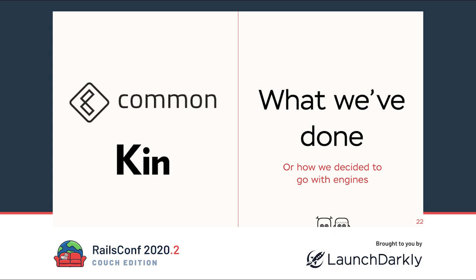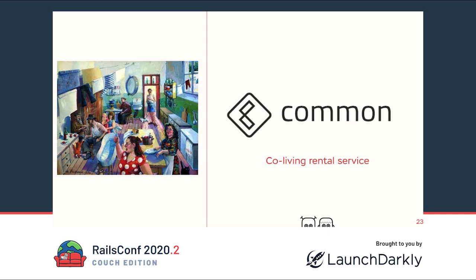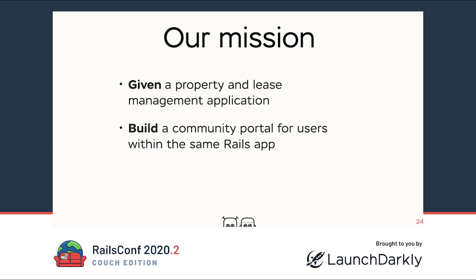Let's take a quick overview of what these services are and why we decided to use this architecture. Common is a long-term co-living rental service working in big cities in the US and Canada. Before we joined their team, they only had a management application for managing properties, leases, billing, and so on — not a user-facing application. Our task was to build a community portal for users within the same Rails app. They didn't want microservices right away because most of the logic was already implemented in the Rails monolith, which could have become a monster if we didn't do the right thing.